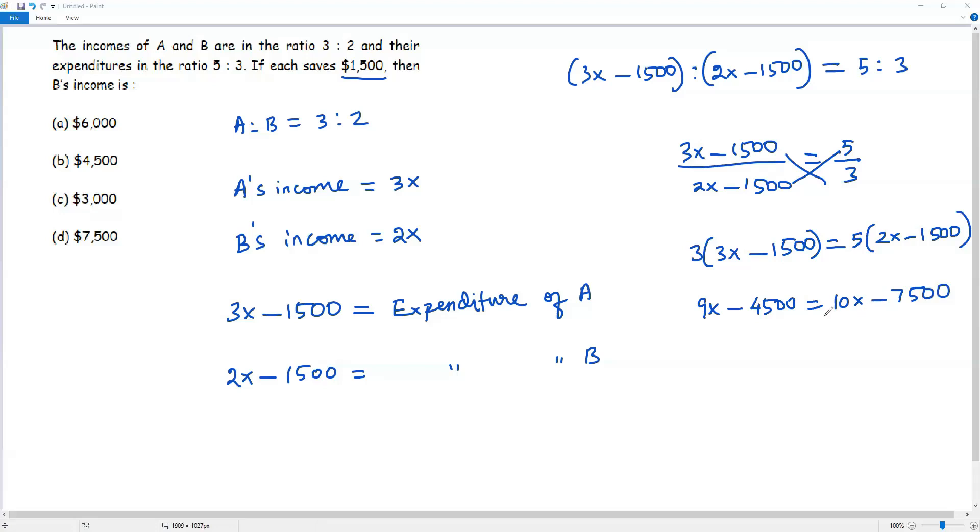My aim is to solve for x, but here the variable x appears on both sides of the equation. We can get rid of the variable on one of the sides. I subtract 9x from both sides to get rid of the 9x on the left side. When I subtract 9x from both sides, the 9x terms will cancel out. I get -4500 = x - 7500.